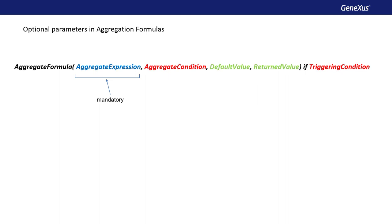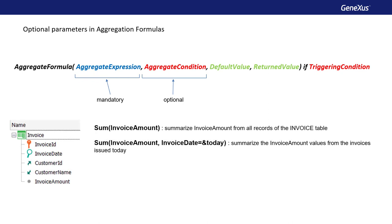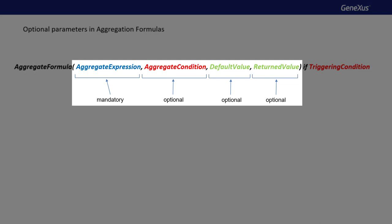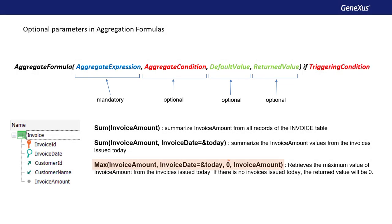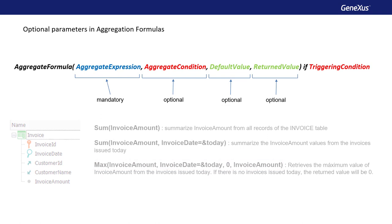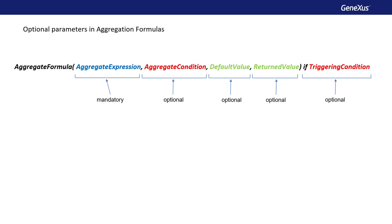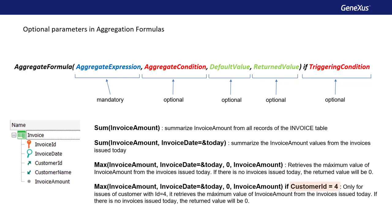In addition to the first mandatory parameter, an aggregation formula can have other parameters, all of them optional. The first one after the aggregation expression is the aggregation condition — that is, the condition that the records to be counted, summed, averaged, and so on must meet. The next parameter is the default value returned by the formula if it doesn't find any record that meets the aggregation condition. The last parameter will be the attribute containing the value to be returned in case records have been processed. After the if, the triggering condition states what condition must be met for the formula to be executed.